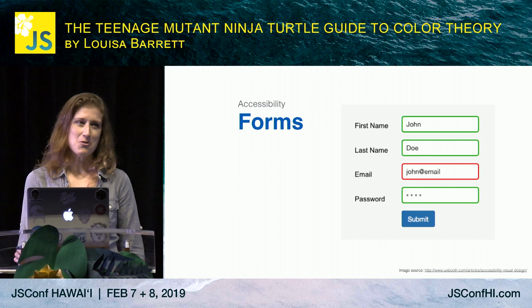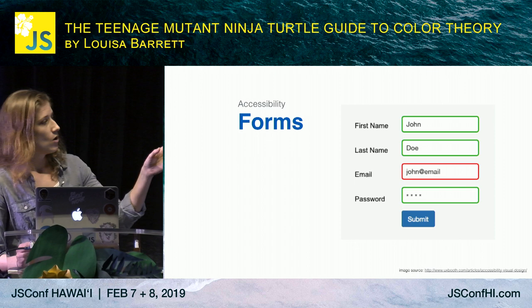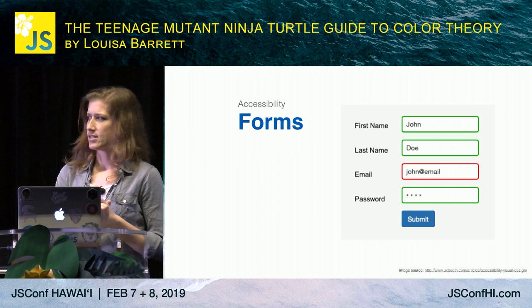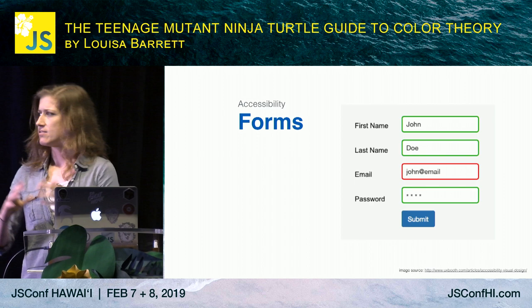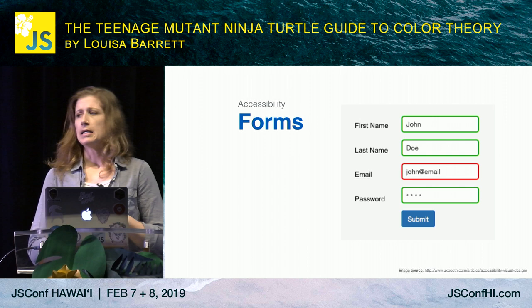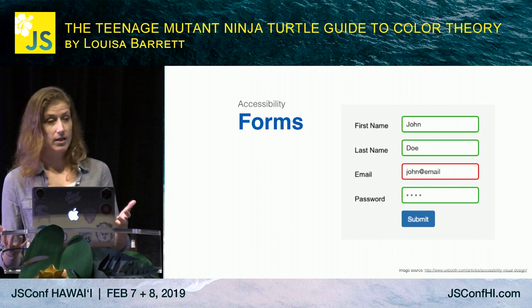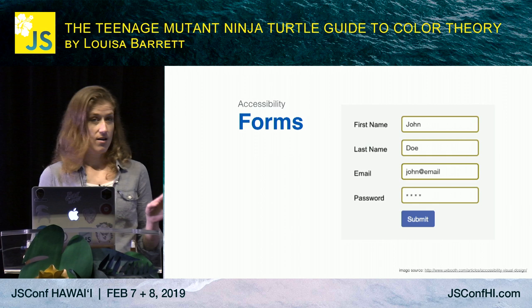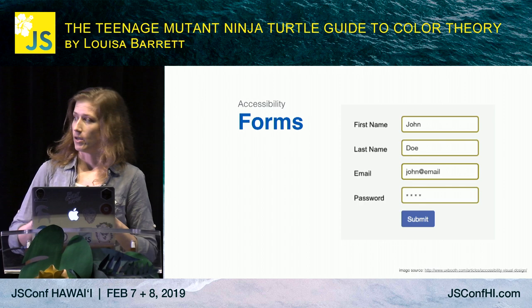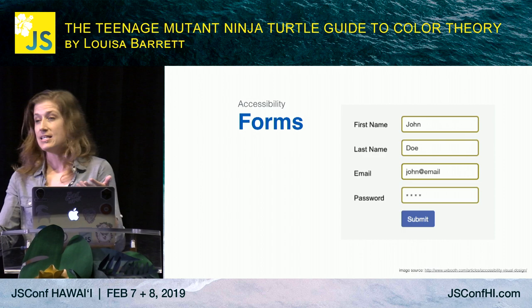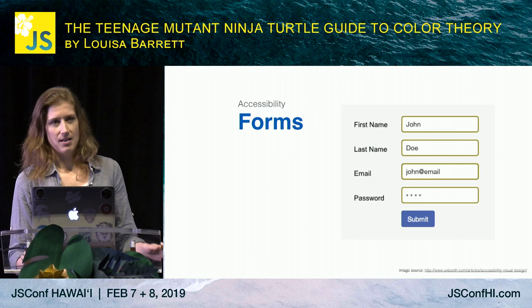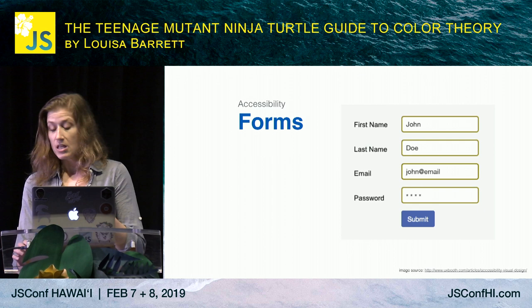As an example, let's talk about forms. If we look at this example, we're using red and green to show an error message — this form hasn't been successfully submitted, and we're using those colors to show which field was problematic. Red means error, green means success. That works great if you have full color vision. What's not awesome is that the most common form of color blindness is red-green color blindness. When I put this form through a red-green color vision deficiency simulator, it completely falls down — you have no idea what happened or how to fix it.